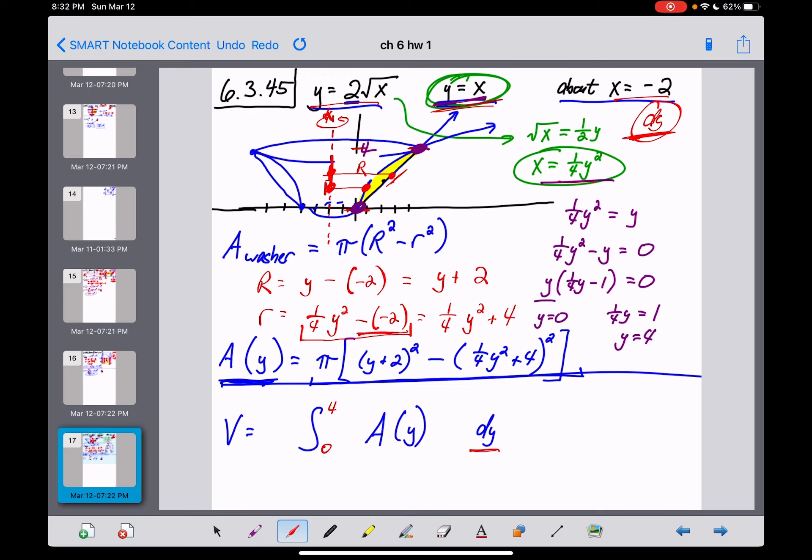The minus negative 2 here should have just become plus 2, and for some reason I decided to square that and make that a plus 4. Okay, so fixing that then everybody, this 4 should have been a 2 here.